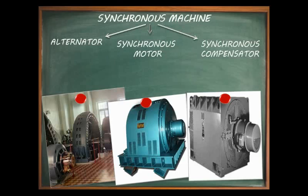A synchronous motor is related to an alternator in the same way as a DC motor is related to a DC generator. In a DC motor, both stator and rotor are supplied from DC supply mains. But in a synchronous motor, the field structure (rotor) is supplied by DC mains, while the armature (stator) is supplied by AC supply. Thus it requires two supplies: one for the armature mains and another for DC excitation of its field windings.